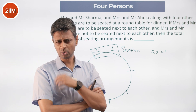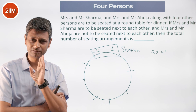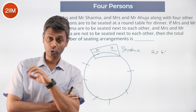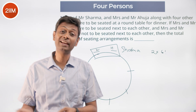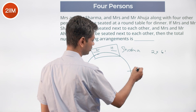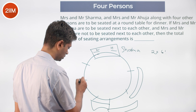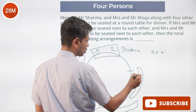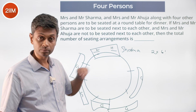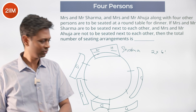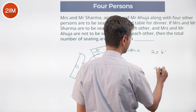Now, Mrs. and Mr. Ahuja are not to be seated next to each other. To handle this, I count all possibilities where they are seated next to each other and subtract that. If the Ahujas are together, they could occupy any of five adjacent seat pairs among the six remaining seats. For each of those five combinations, the remaining four people fill four seats in four factorial ways.